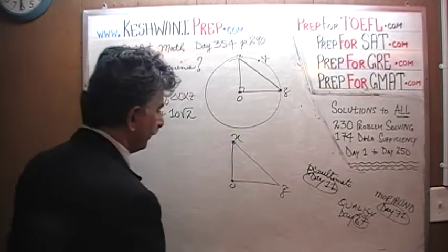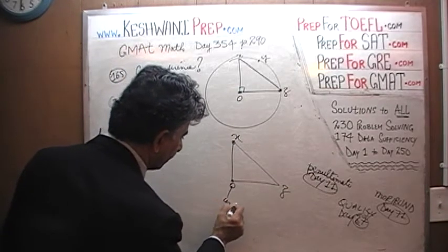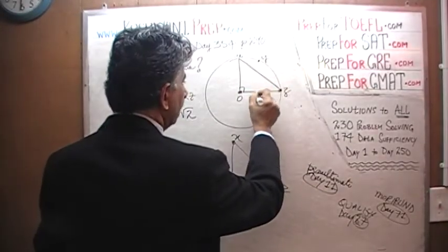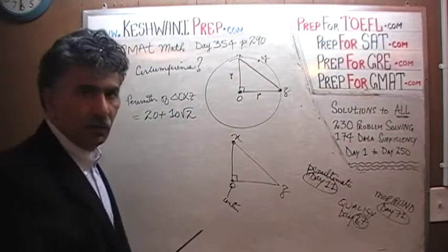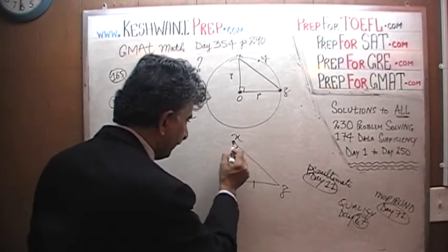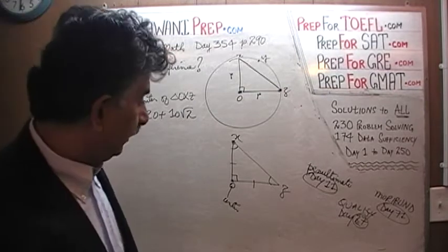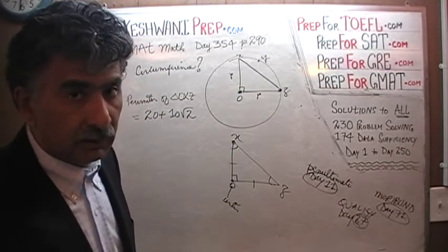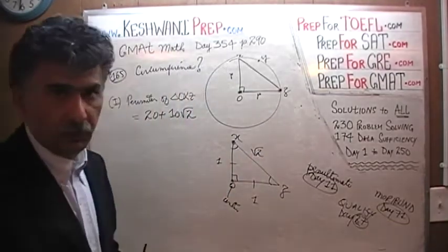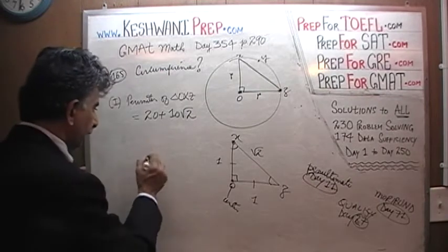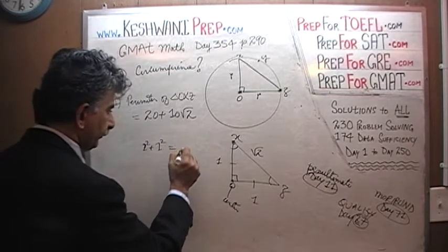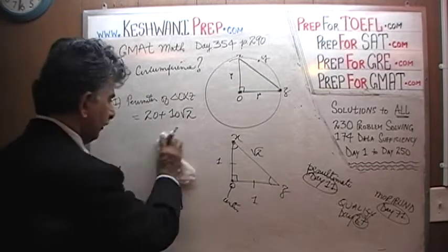Let's talk about triangle OXZ. O is the center of the circle, so the distance from O to X is the radius, and the distance from O to Z is also the radius. It makes a right angle, so it is a 45-45-90 triangle — an isosceles triangle. In a 45-45-90 triangle, the ratio of the sides is always 1 to 1 to root 2.